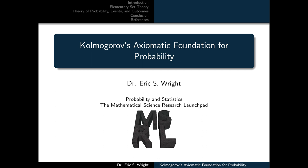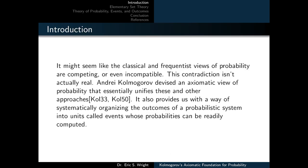Welcome to Kolmogorov's Axiomatic Foundation for Probability, a video lesson for probability and statistics. It might seem like the classical and frequentist views of probability are competing or even incompatible, but this contradiction isn't actually real. Andrei Kolmogorov devised an axiomatic view of probability that essentially unifies these and other approaches, providing a way of systematically organizing outcomes into units called events whose probabilities can be readily computed.